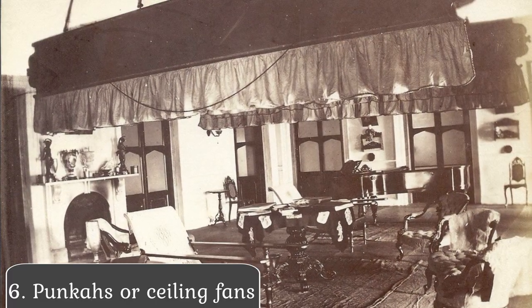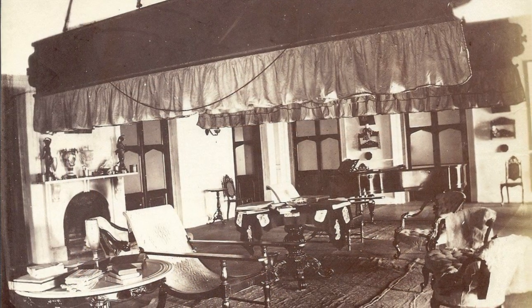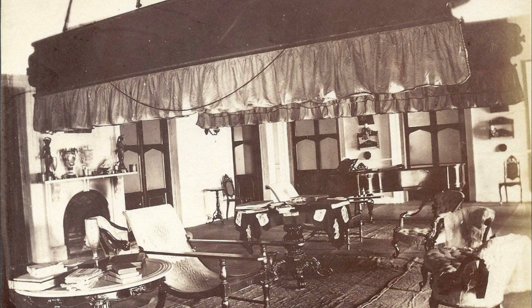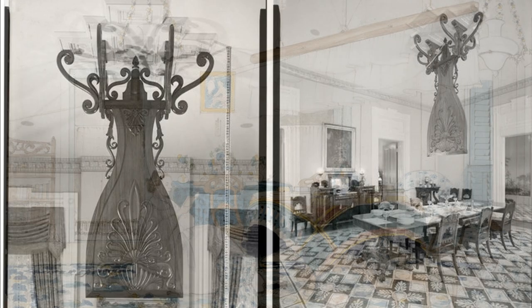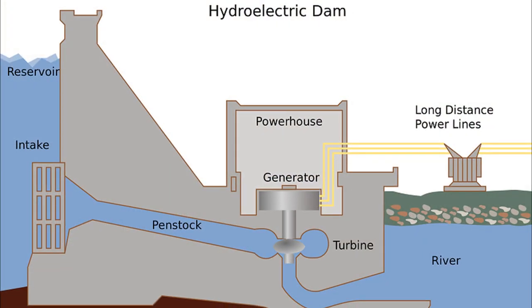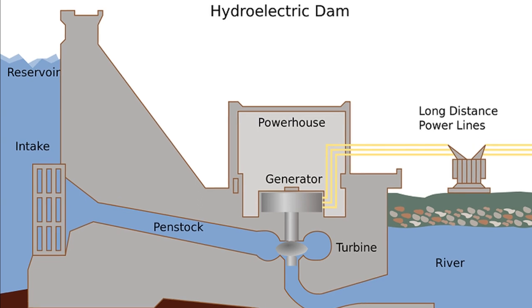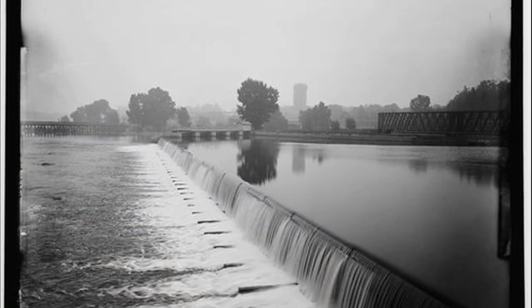In the absence of electricity, a large swinging screen fan or pankha was hung from the ceiling. These screens were swung by staff members to allow cool air to circulate within the room. The pankha also formed an interesting decorative accessory and was made of natural materials like rattan or fabric suspended from a wooden frame. India started the generation of hydroelectricity only by the end of the 19th century; the first hydroelectric plant was installed in Darjeeling in the year 1897.